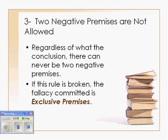Rule number 3: you cannot have two negative premises, regardless. So regardless of whether the conclusion is affirmative or negative, there cannot be two negative premises. Remember, E and O statements are negative, so if you have a syllogism that's EE, EO, OE, or OO, that's going to be a violation of rule number 3. This fallacy is called the fallacy of exclusive premises.